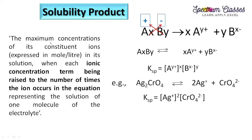The solubility product can be defined as the maximum concentration of its constituent ions, expressed in mole per liter in its solution, with each ion concentration term raised to the number of times the ion occurs in the equation representing the dissolution of one molecule of the electrolyte.